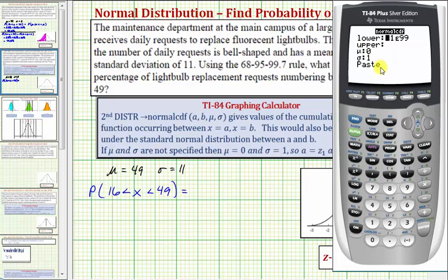Now if you don't see this screen, don't panic. That means you have an older 84 or an 83, and after we enter the information here, I'll show you what you need to do. But if you do have this screen, we first want to enter the lower x value, which in this case is sixteen. So sixteen, enter. The upper x value is forty-nine, so forty-nine, enter.